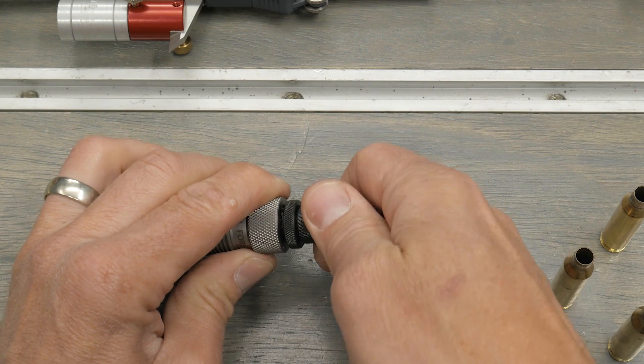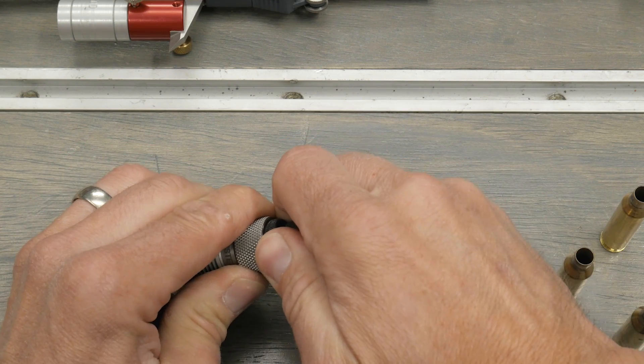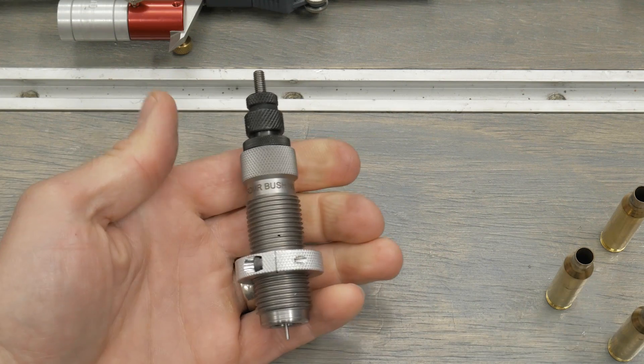And then we just screw the spindle down until it contacts the bushing. You can feel a very definite stop there. Back it off an eighth of a turn just to give it a tiny bit of float so that bushing can self-center. That's it.